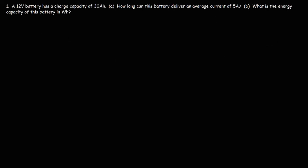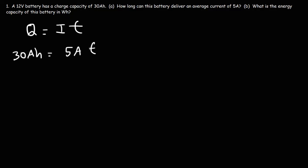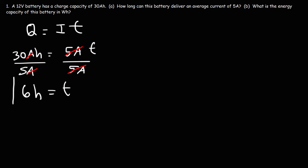Problem 1: A 12-volt battery has a charge capacity of 30 amp hours. How long can this battery deliver an average current of 5 amps? Charge equals current times time, so time equals Q divided by I: 30 amp hours divided by 5 amps. The unit amps cancel and we get 6 hours.